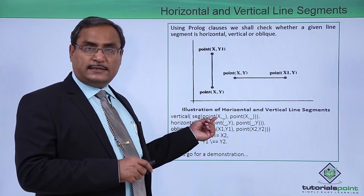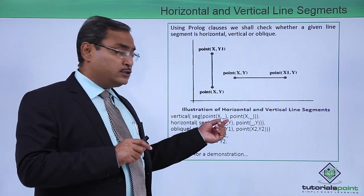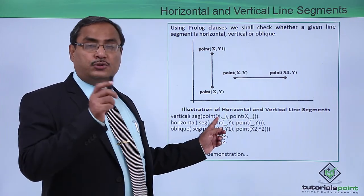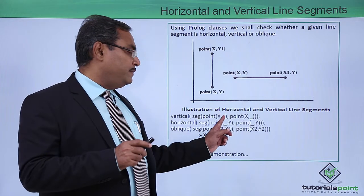That is why we have used this x as a variable written in capital letter, and underscore means anonymous variable. Here x, x is there, they must be same, and here the anonymous variables are there.